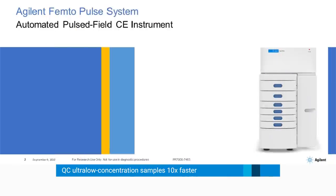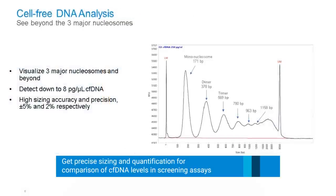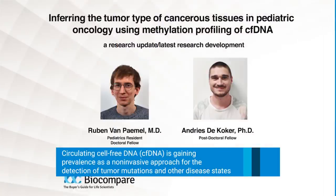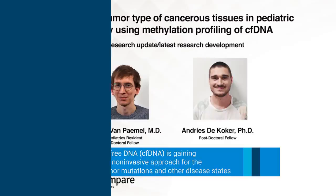In our webinar today, you will hear from our invited speakers about how they use the femtopulse in their work with cfDNA to assess nucleic acid quality. For those of you who aren't familiar with what cfDNA looks like, shown here is an example on the femtopulse. We're here because we really think that quality control of cell-free DNA is very important.